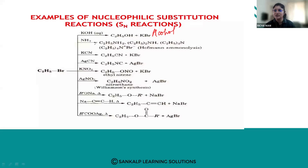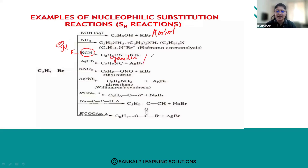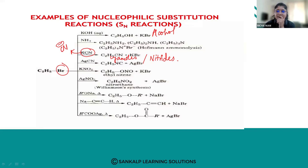Next, if we use the reagent KCN — that is potassium cyanide — the nucleophile generated is the cyano group, that is CN⁻. The product obtained will be cyanides, also called nitriles. So by using KCN as the nucleophilic reagent, the CN nucleophile is generated, the Br is replaced by the CN group, and we get alkyl cyanides or nitriles.